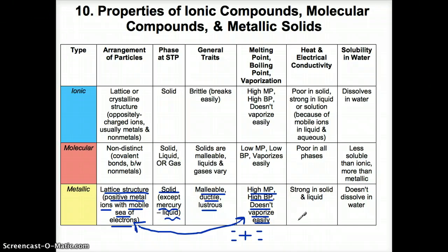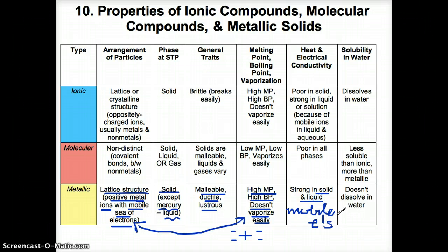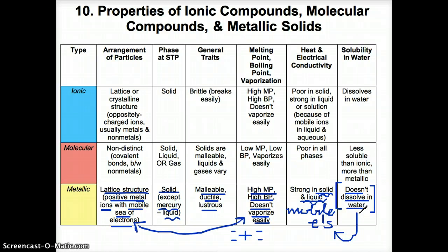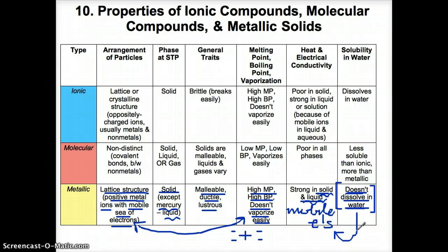Metallic substances conduct heat and electricity very strongly in solid and liquid phases. The reason is because they have mobile electrons — when you have those moving charges and electricity hits them, they can conduct heat and electricity very easily. Note that metals do not conduct heat and electricity in aqueous phase, because there is no such thing as a metal aqueous phase — metals do not dissolve in water. If you threw a copper or lead shot into water, it would just sit there. Please make sure you complete your notes for tomorrow. See you tomorrow, bye-bye.